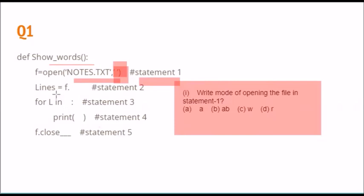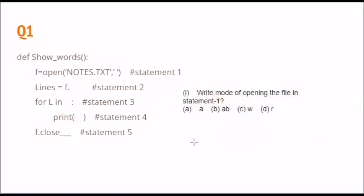Let's see the file being opened — something is being printed over here. We have options: a, b, w, and r. Since there is nothing like writing involved, we are only reading the file. So the correct answer is option D, which is read mode.